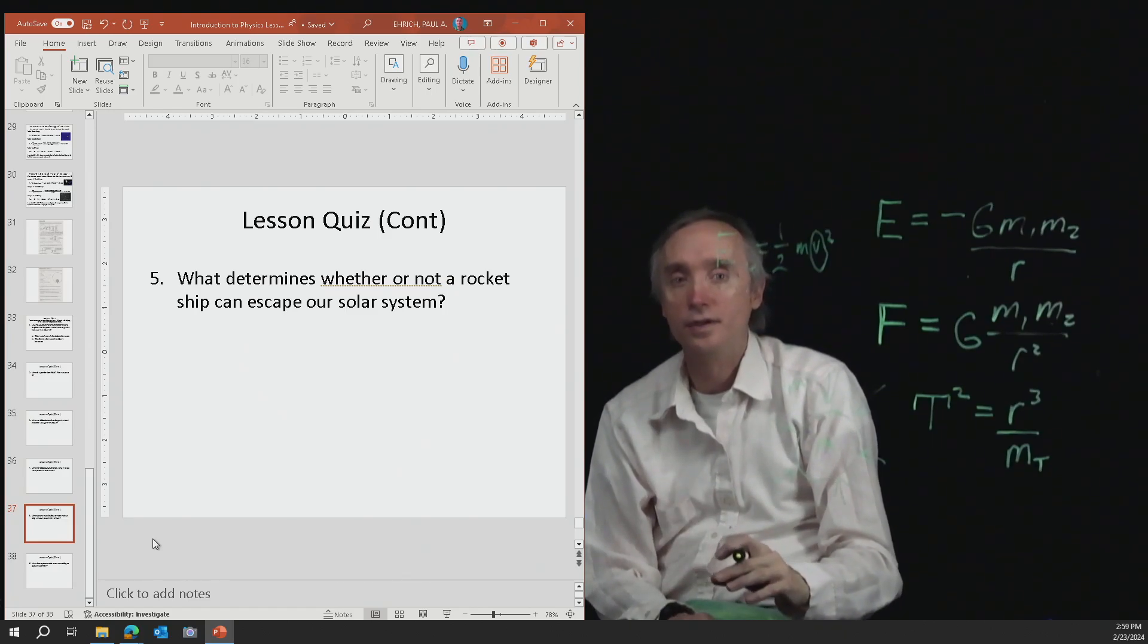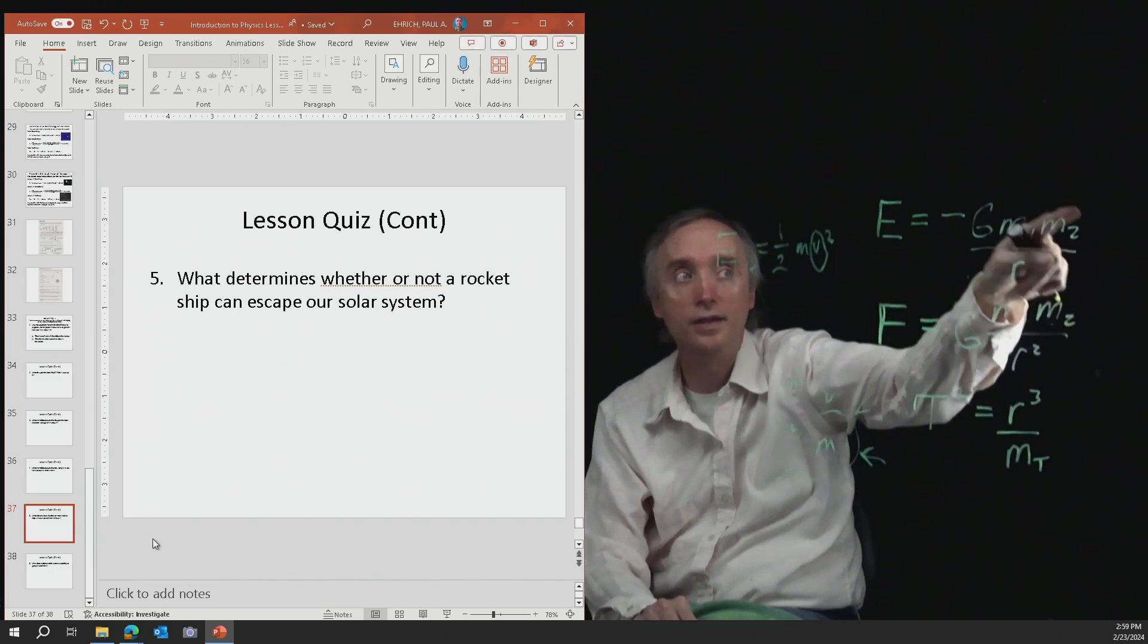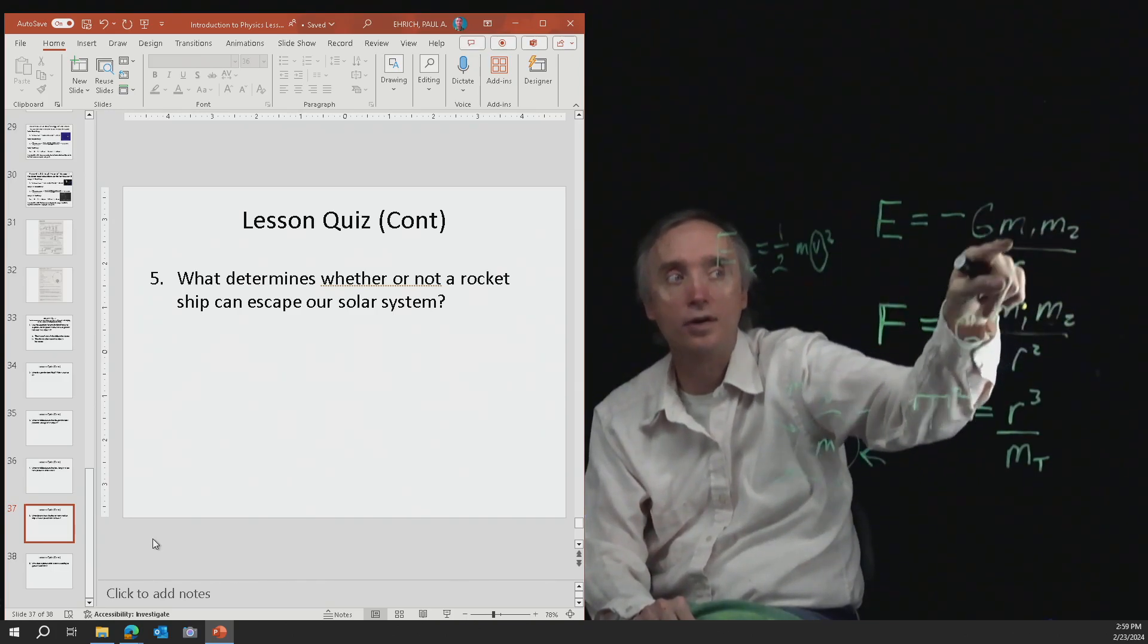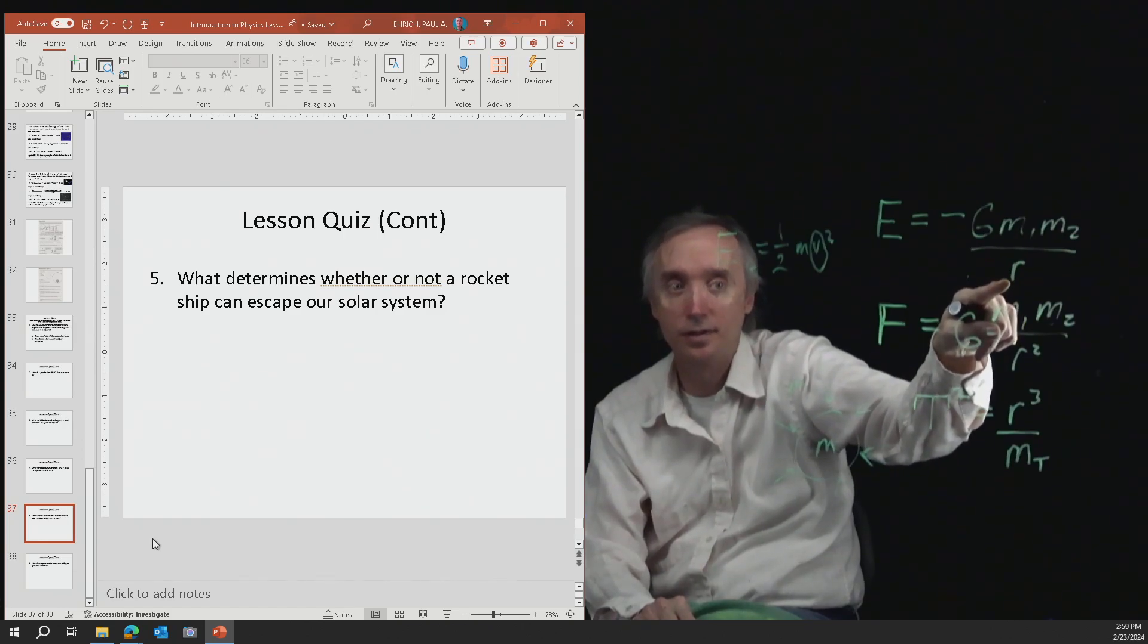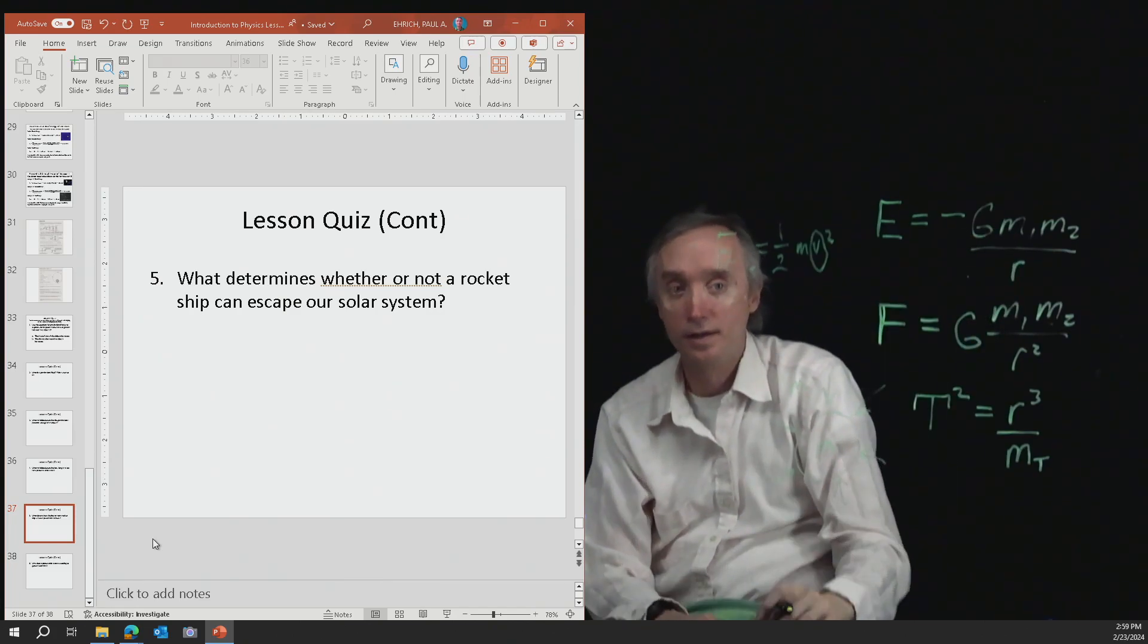On the other hand, the potential energy is this one. And it is going to depend on the distance. And it's also going to depend on the mass of the star and the mass of the object that's trying to escape.